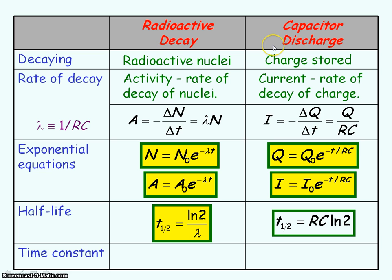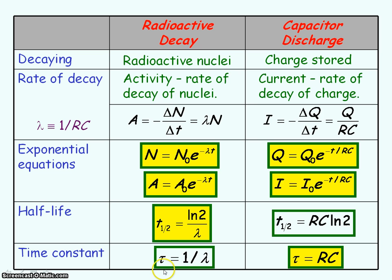The time constant for a capacitor discharging is equal to the time taken for the charge stored on the capacitor to decay to 37%, that is to e to the minus 1. So the time constant equals RC, and therefore the time constant is equal to 1 divided by the decay constant. Consequently, the time constant for radioactive decay is also equal to 1 divided by the decay constant.